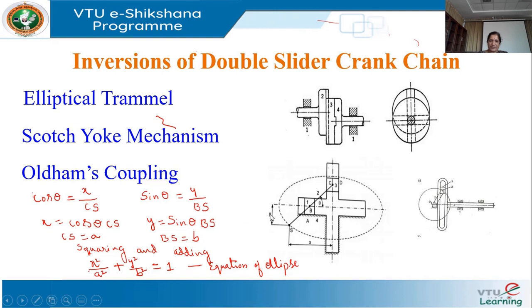The path traced by point S is an ellipse with A and B as the semi-major and semi-minor axes. If the tracing point is placed exactly at the midpoint of BC, then A and B are equal, and we get x² + y² = A², which is the equation of a circle. So the elliptical trammel is used to draw an ellipse.